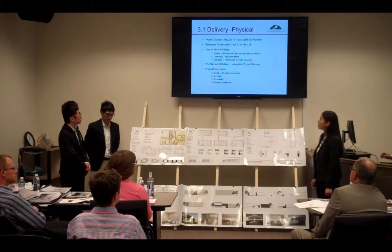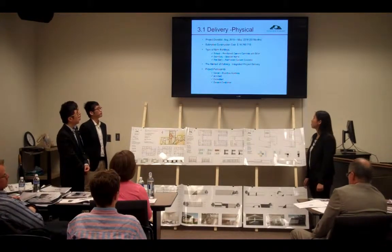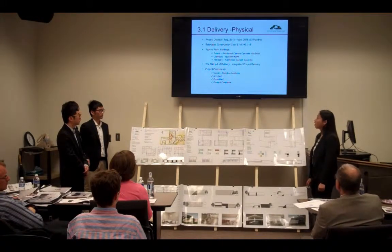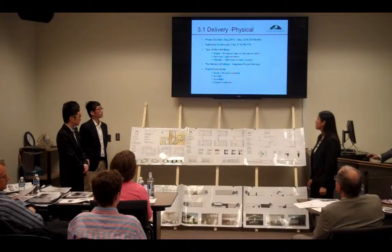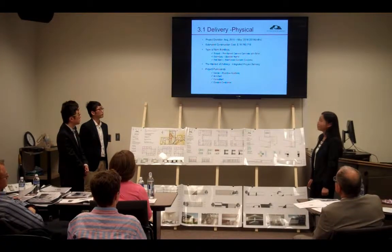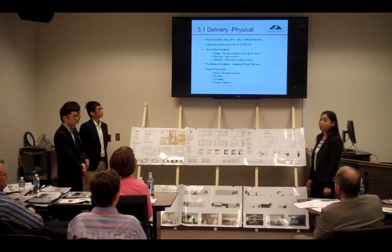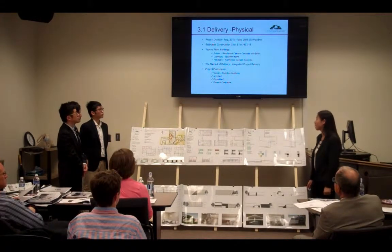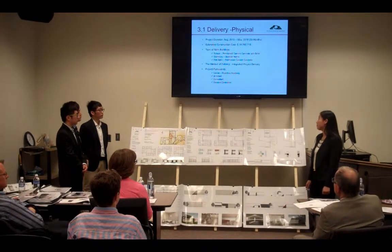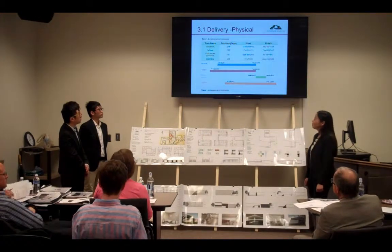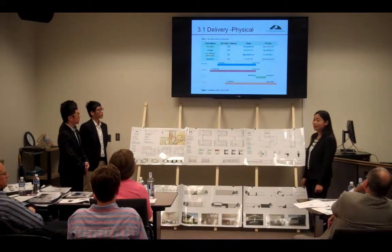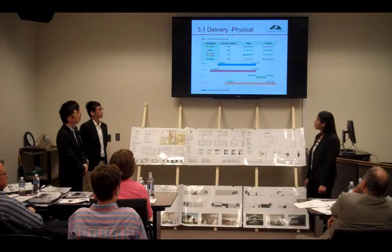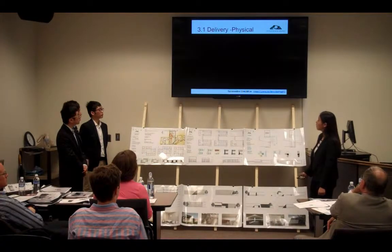Let's review the basic information for our project. The project duration is supposed to be 33 months, starting August 2015 to May 2018. The estimated construction cost will be nearly $90 million. There will be three main buildings on site: the school, the dormitory, and the red barn. The delivery method of our project is IPD, so all participants were involved in the project from the pre-design phase to project closeout. Because of the unique design method, we will have only one construction staging, which will last 22 months, including the remodeling of the clubhouse.